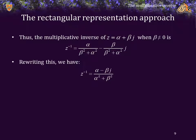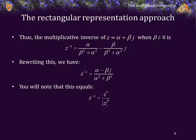Let's rewrite that slightly. Doesn't that look a little bit familiar? Alpha minus beta j — is that not the complex conjugate of z? And alpha squared plus beta squared — isn't the square root of alpha squared plus beta squared the absolute value of z? Consequently, alpha squared plus beta squared is the absolute value of z squared. Thus, this formula for the multiplicative inverse is just the complex conjugate of z over the absolute value squared.